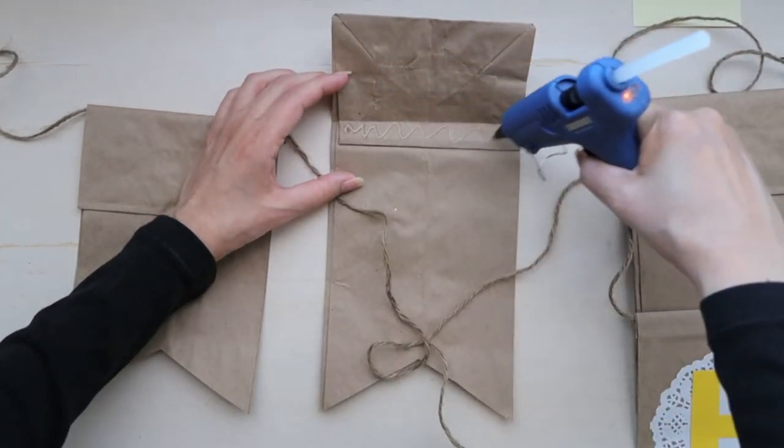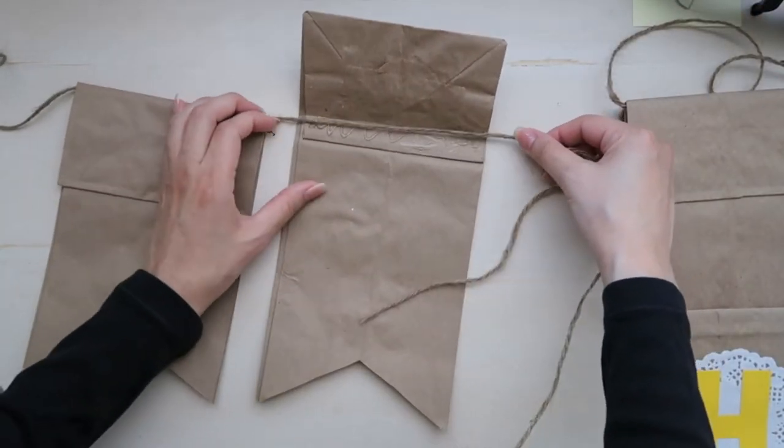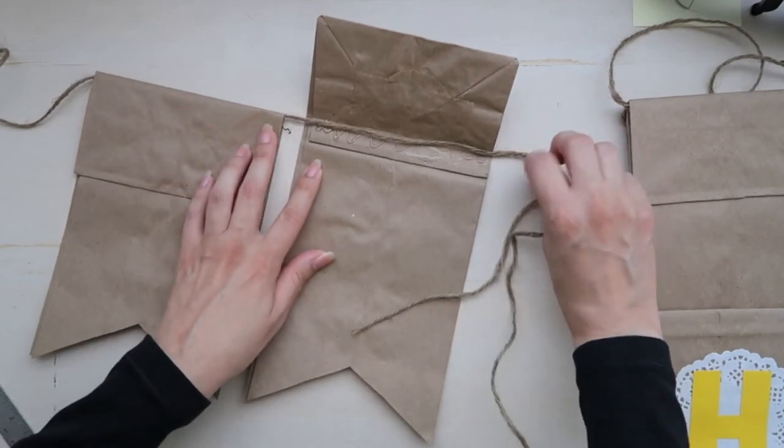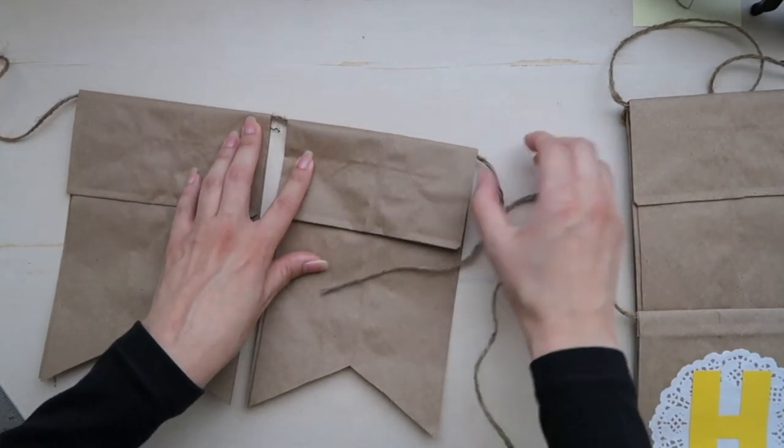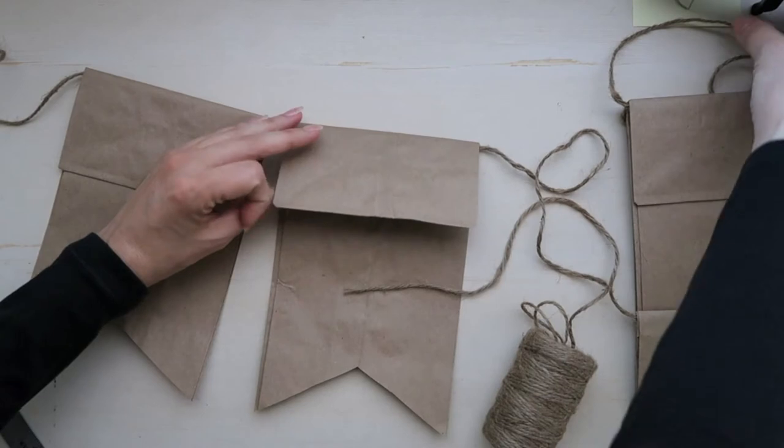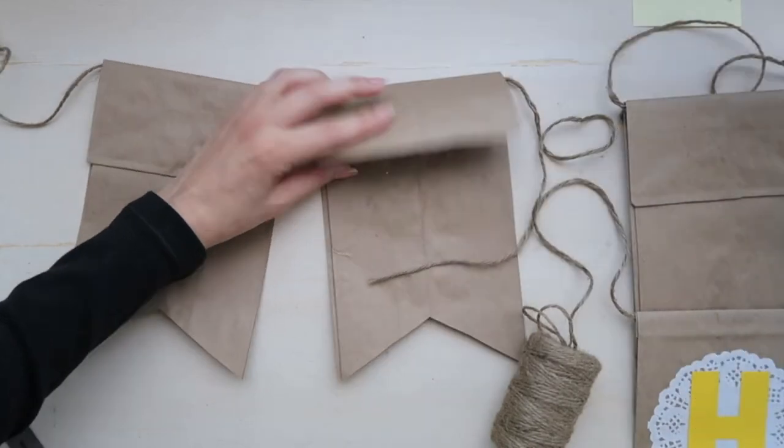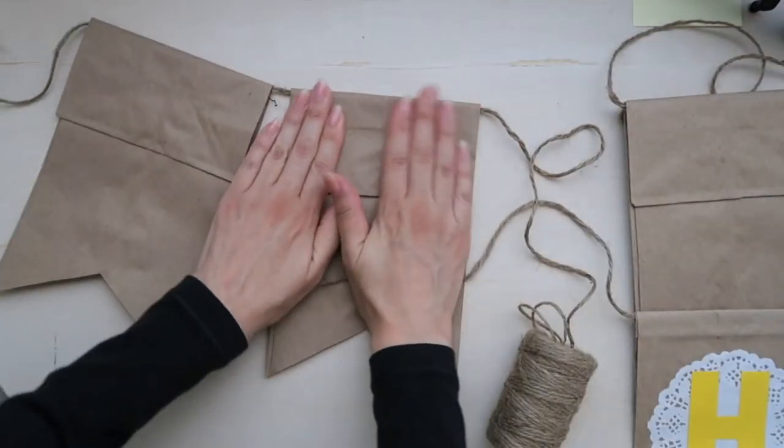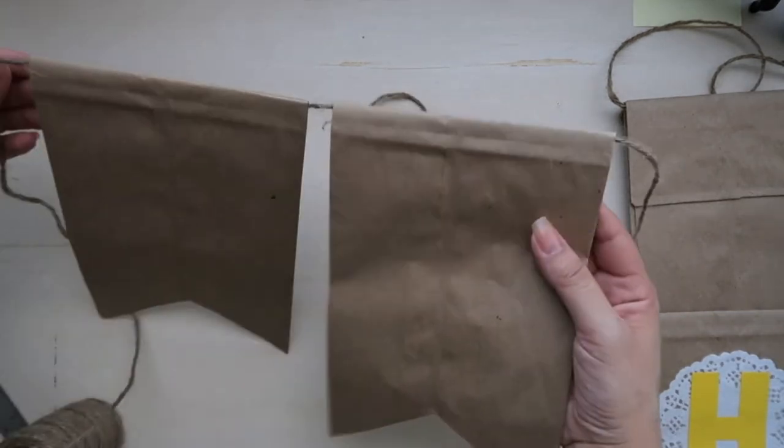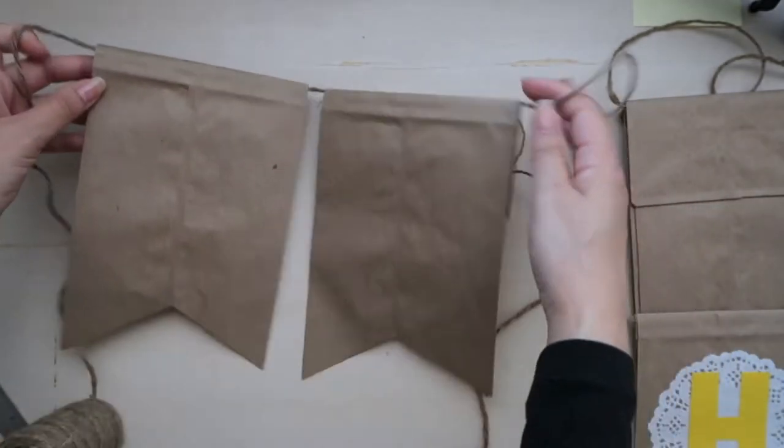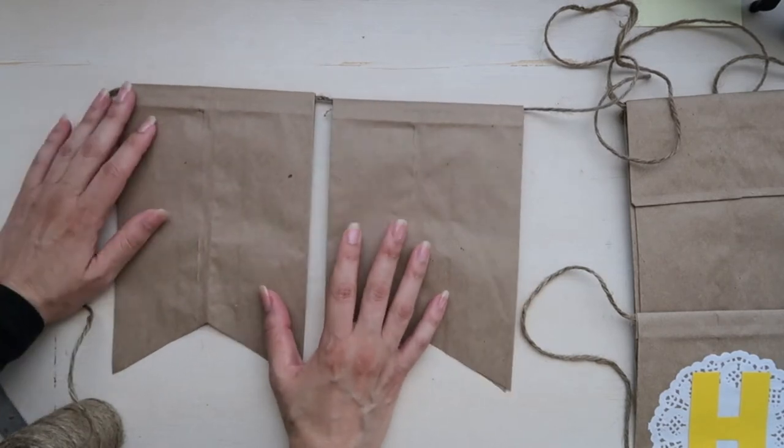I'm going to add more glue. I'm putting my string down. And next I just need to secure this rectangle part. Turn it forward. And there we have two banner pieces already. So continue along the string until you have all the letters you need.